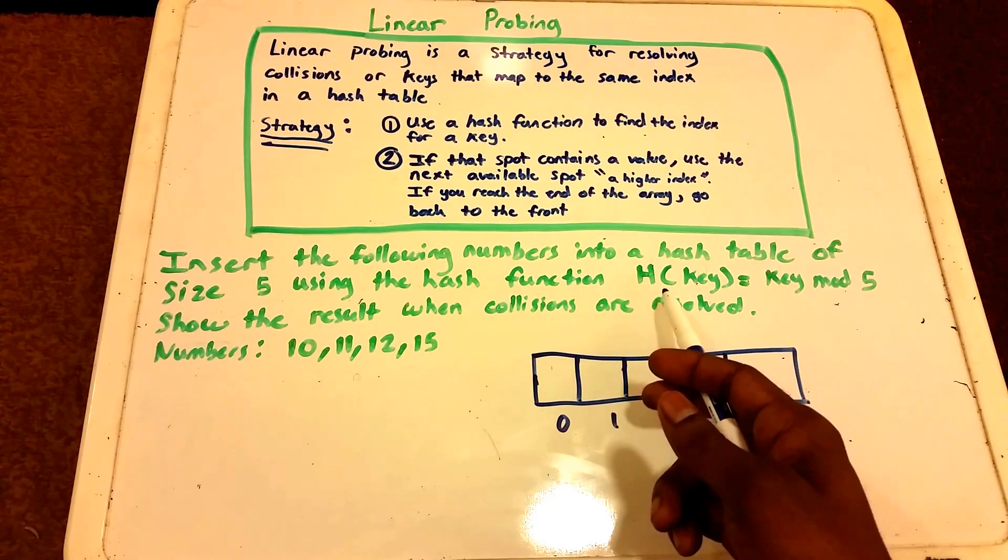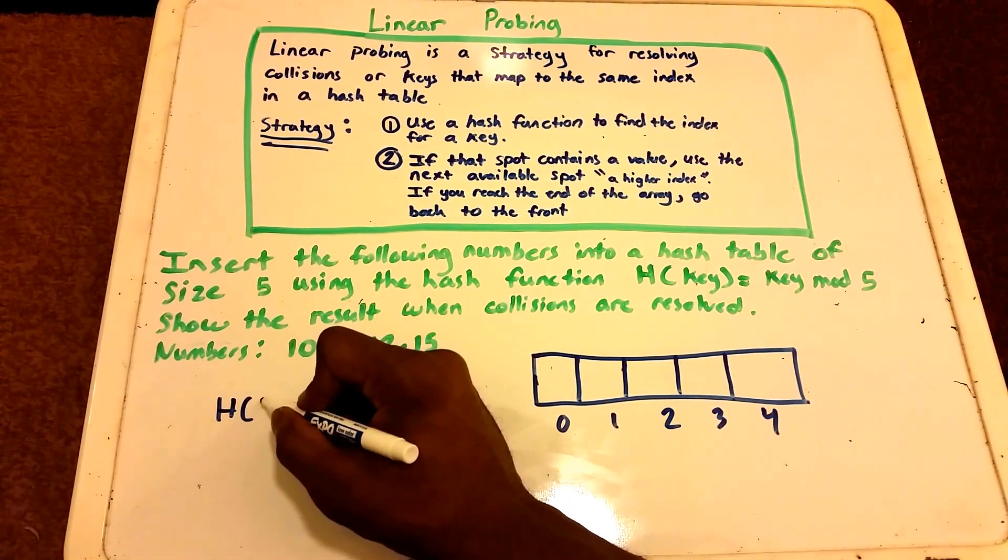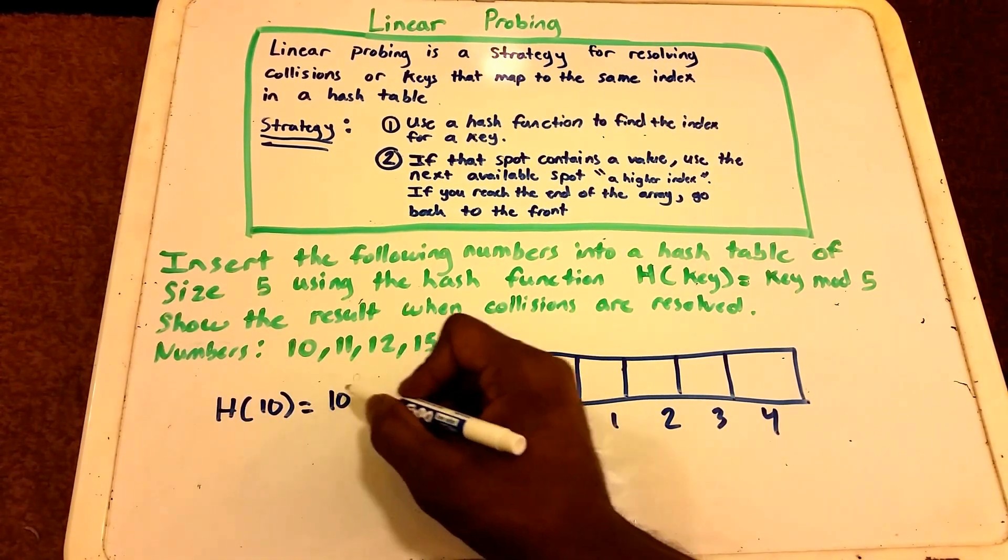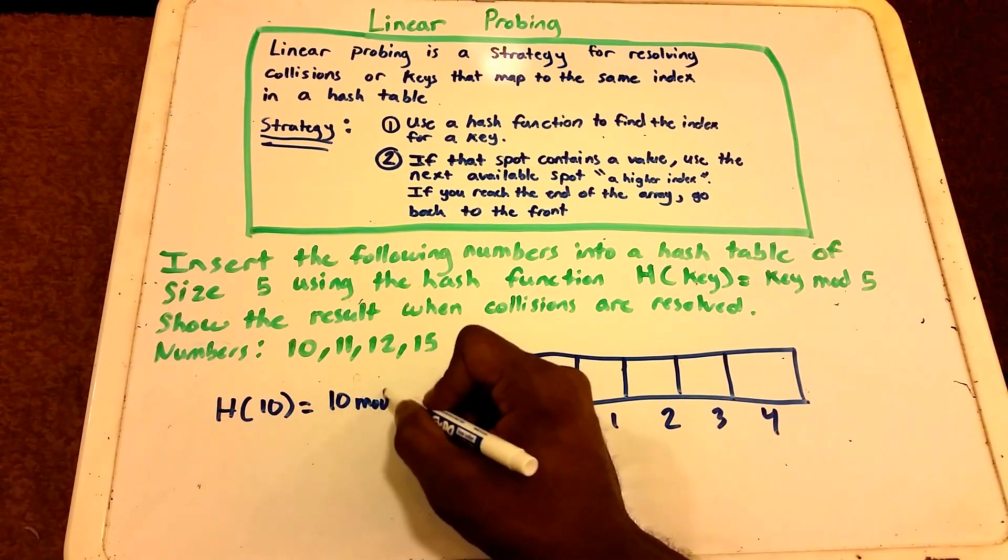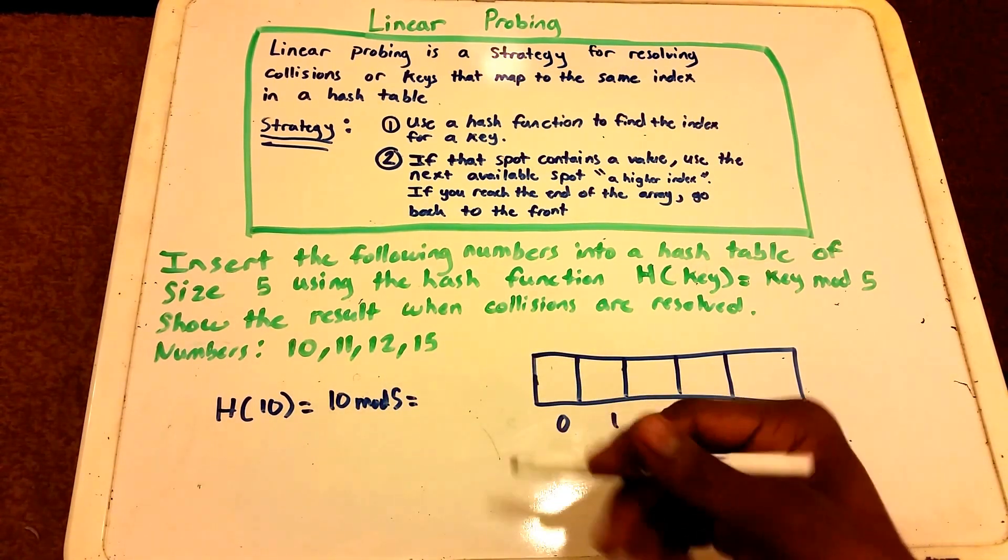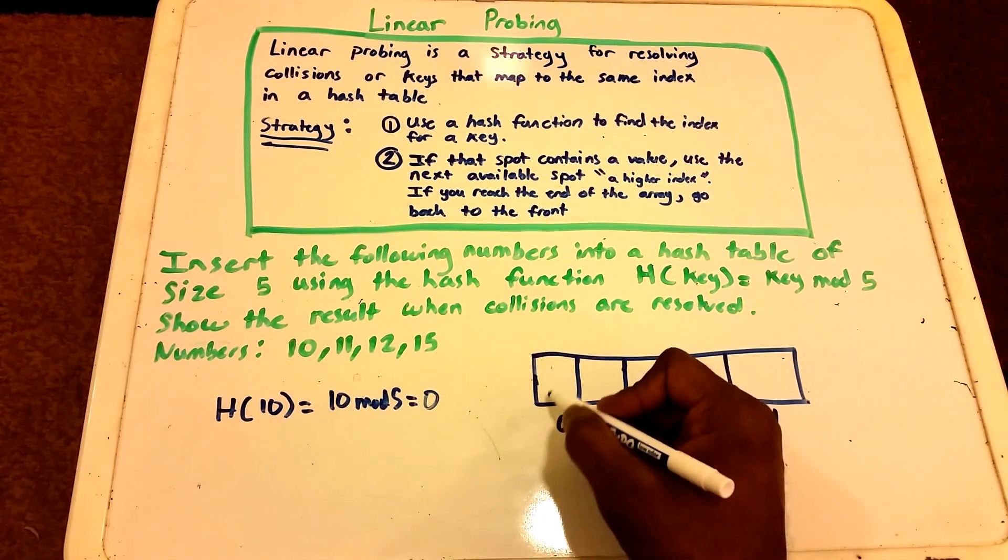Now what we do is we take these keys and we plug them into our hash function. So H of 10 is equal to 10 mod 5, this is going to give us our hash value which is 0. So we go to index 0 and we place the value 10.